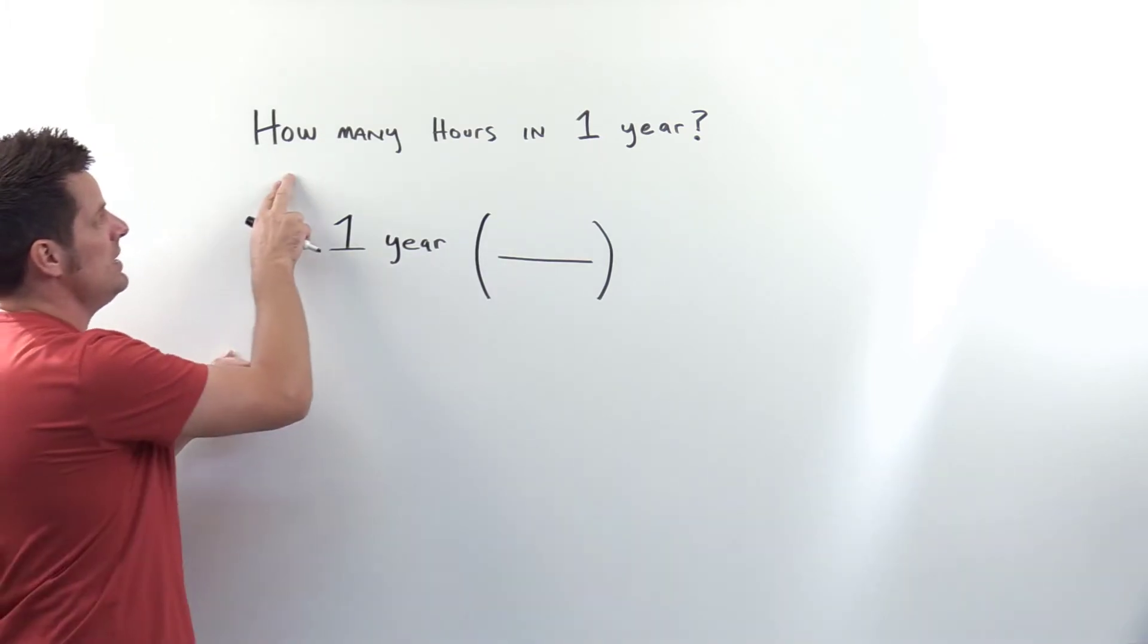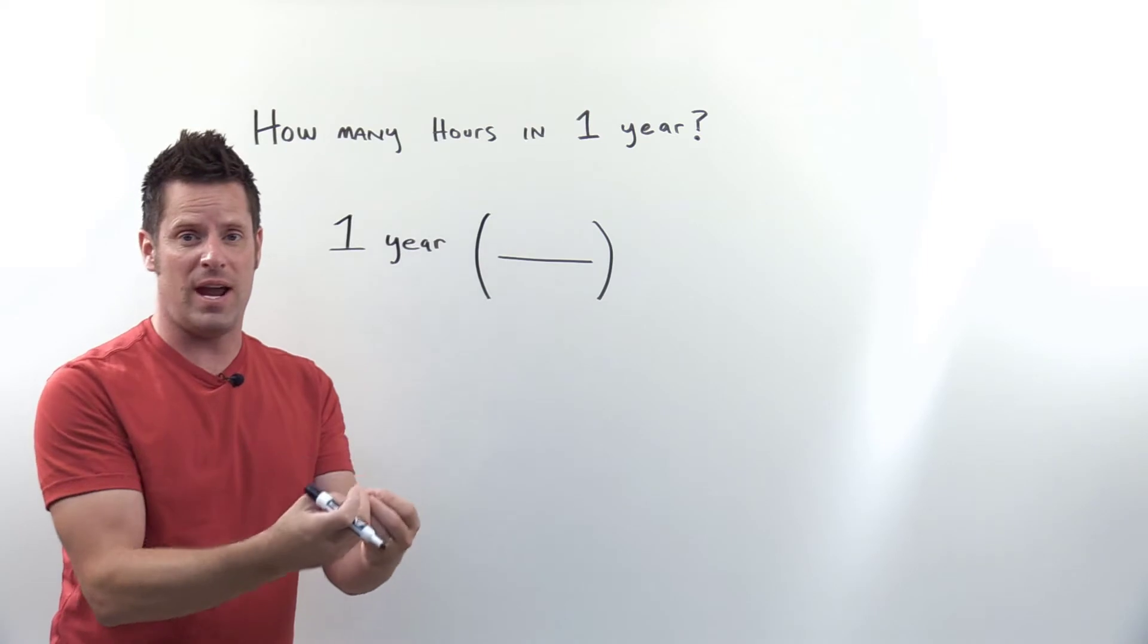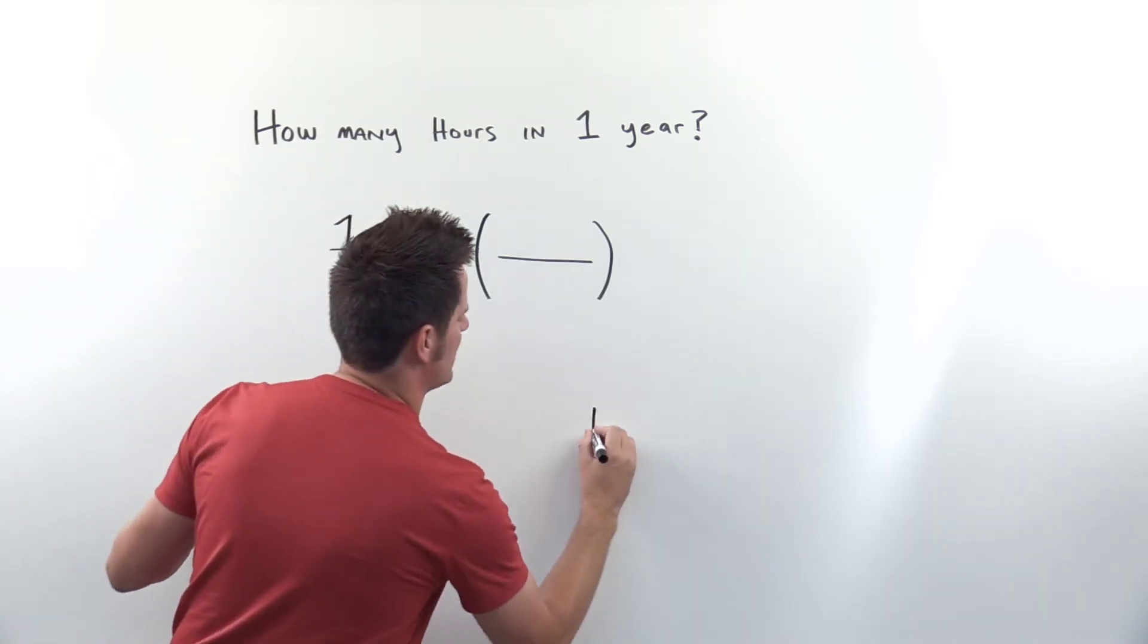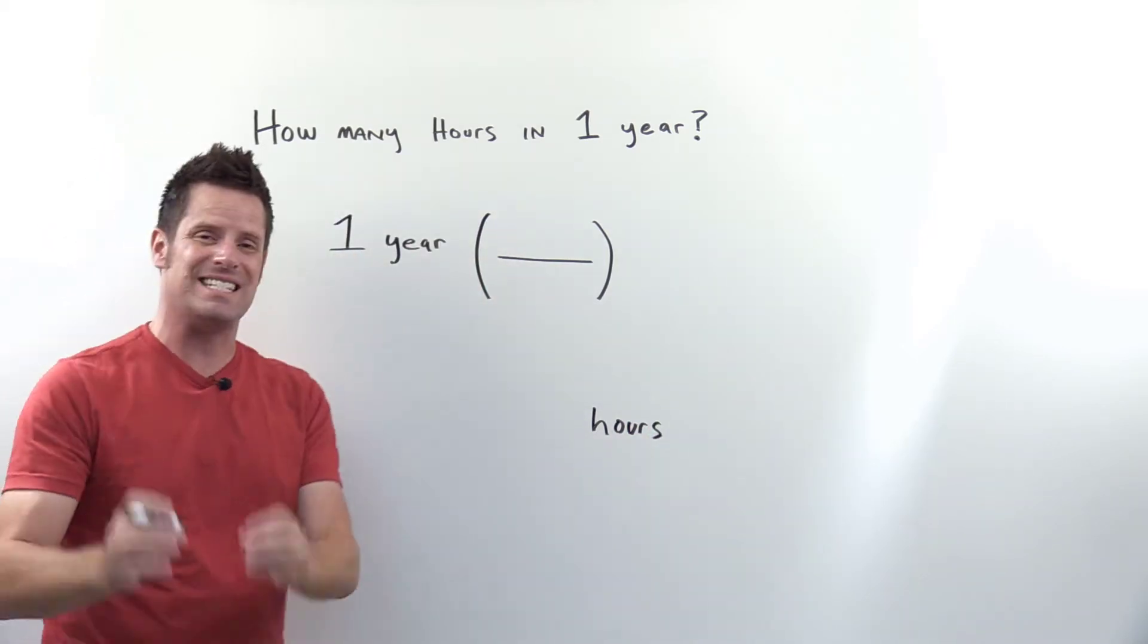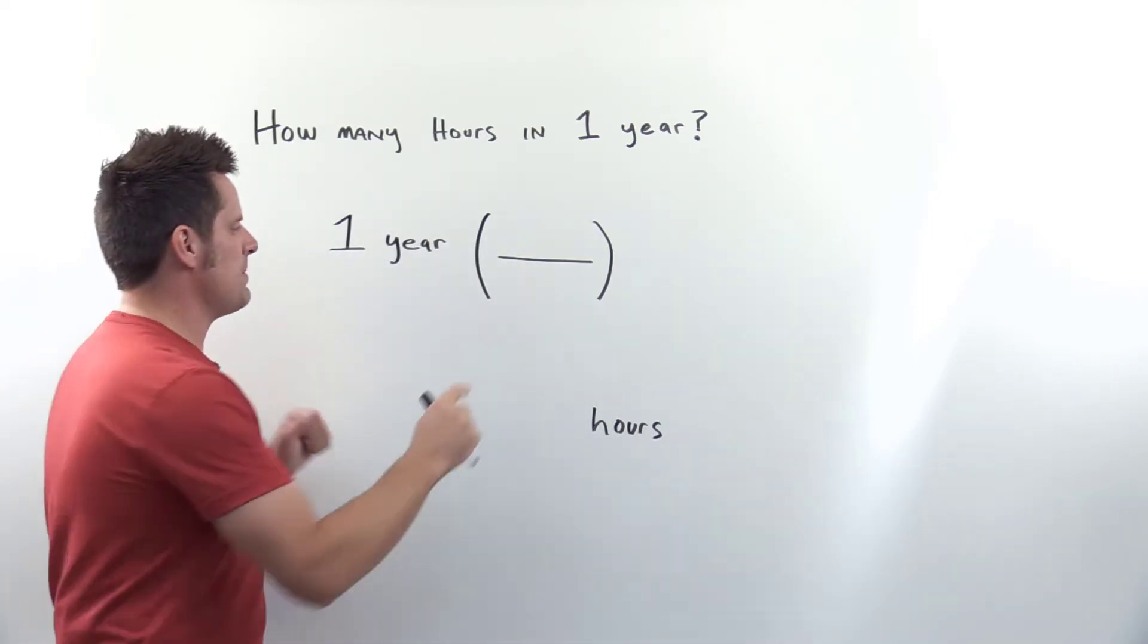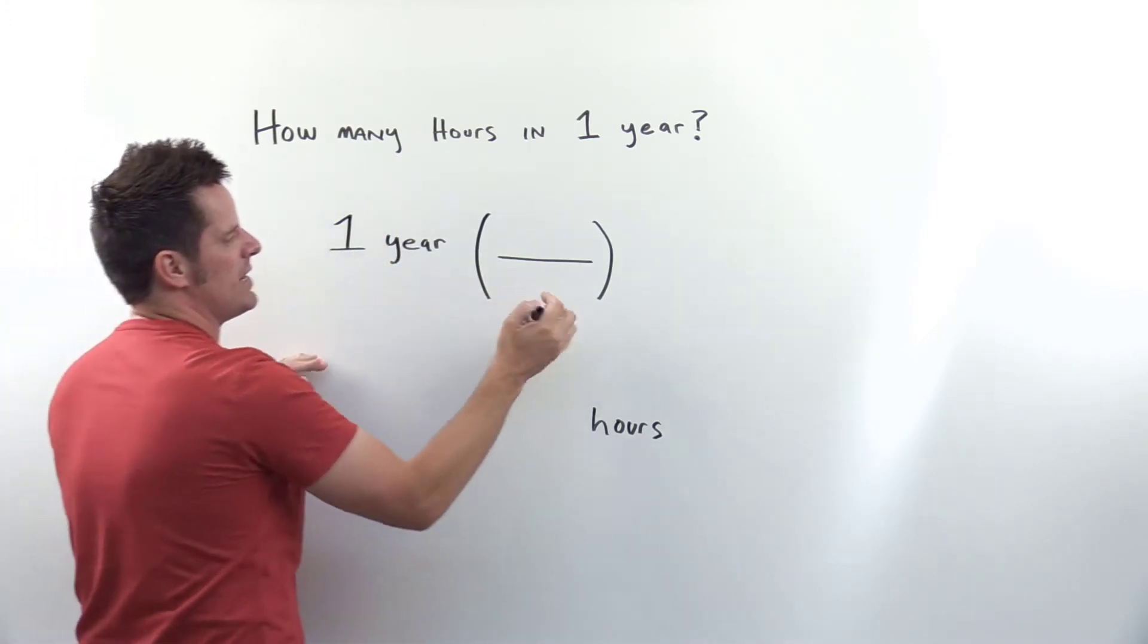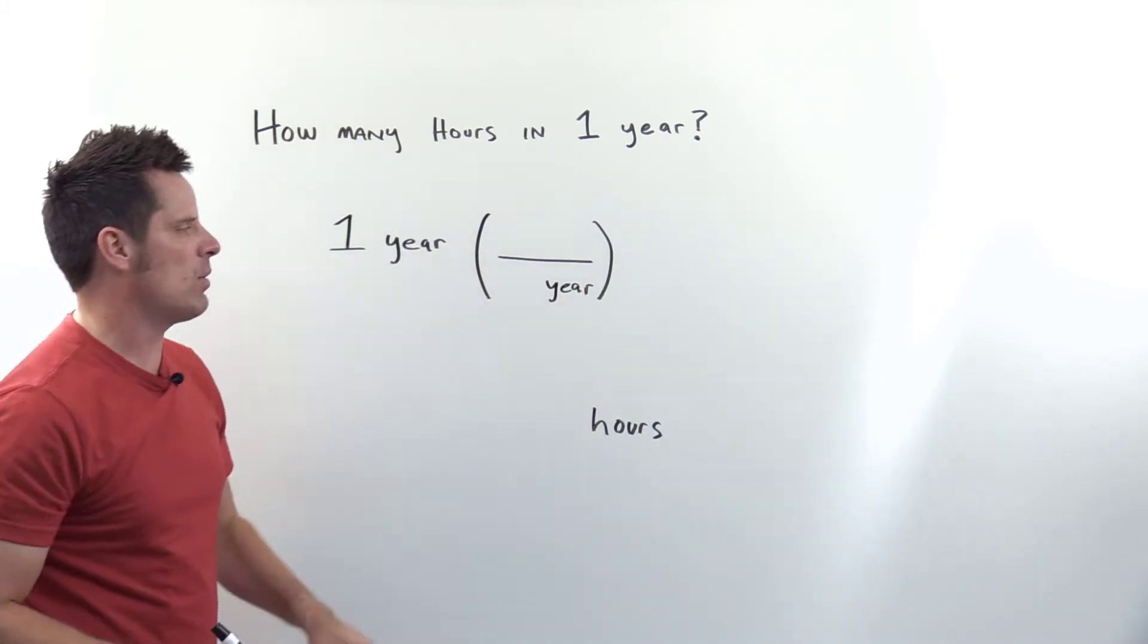The question asks how many hours are in a year, so my final answer will have units of hours—that's my destination. The units in the denominator will almost always be the same as the units in the numerator of the previous term. I have year on top, so I'll put year in the bottom. I eventually want to get to hours.